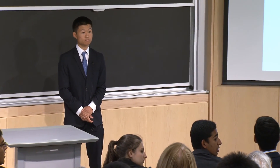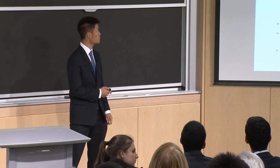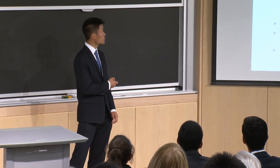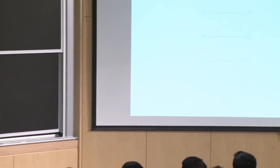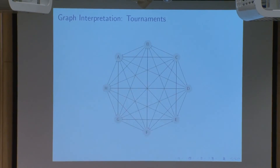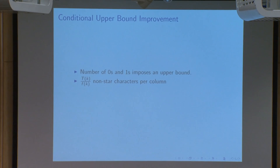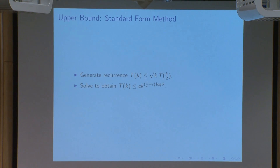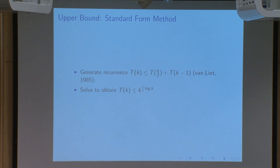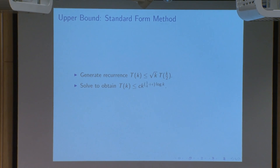Can you give a glimpse as to where your improved recurrence comes from? Is it derived from the graph model? The improved recurrence comes from considering Van Lint's standard form method in combination with this graphical interpretation of the problem. I look at the size of the bicliques needed to cover the graph, and instead of simply looking for smaller copies of the tournament code, I'm able to show that the smaller tournament codes have to essentially cover parts of the larger tournament code up to a certain size.